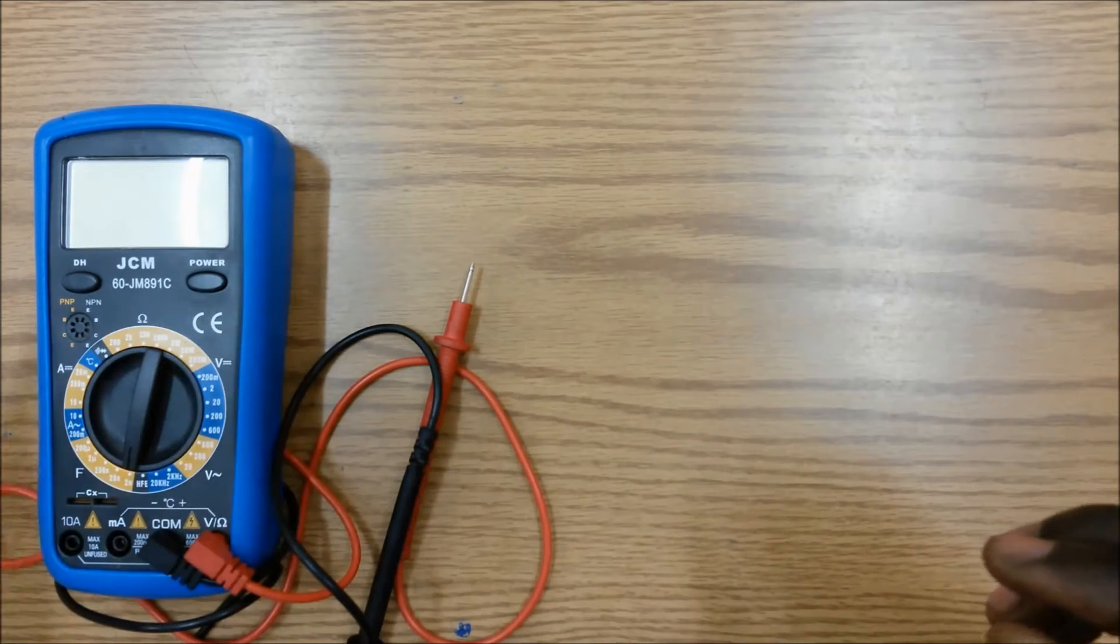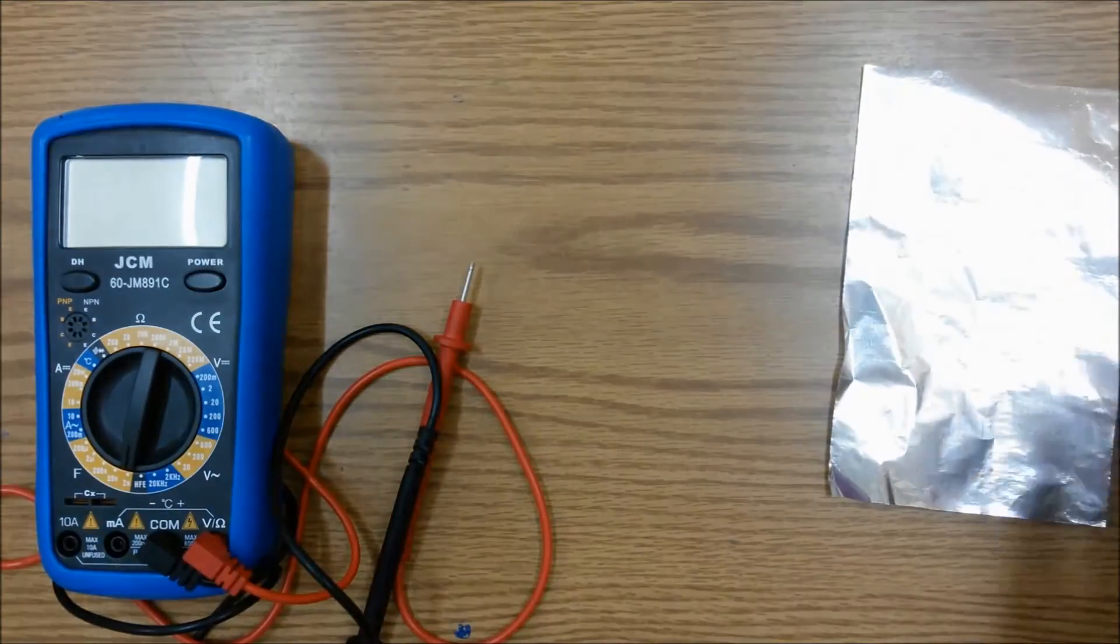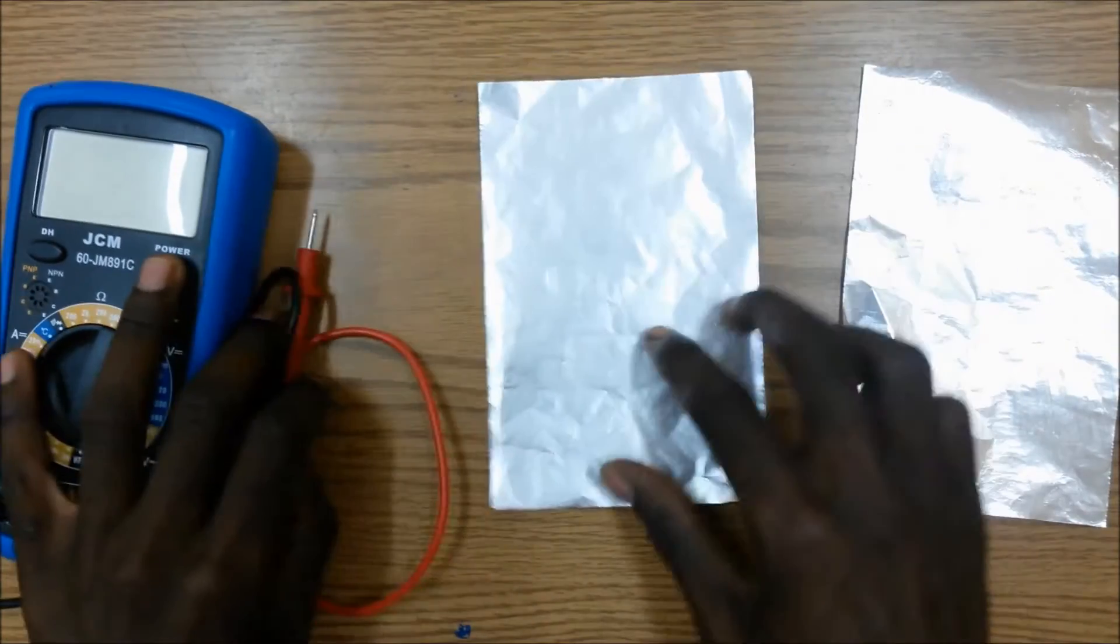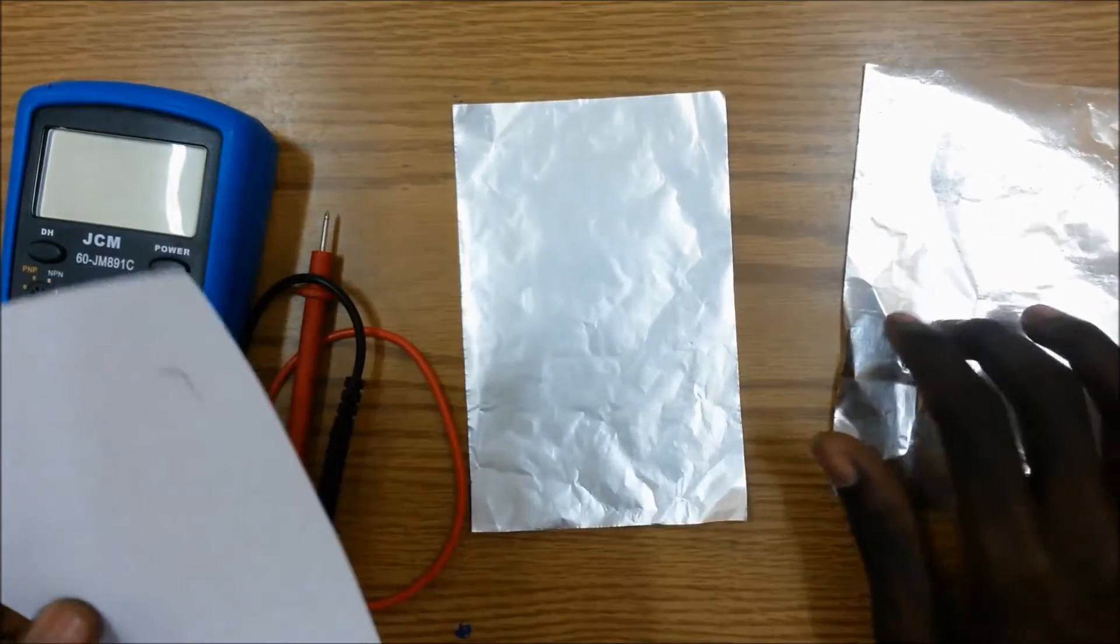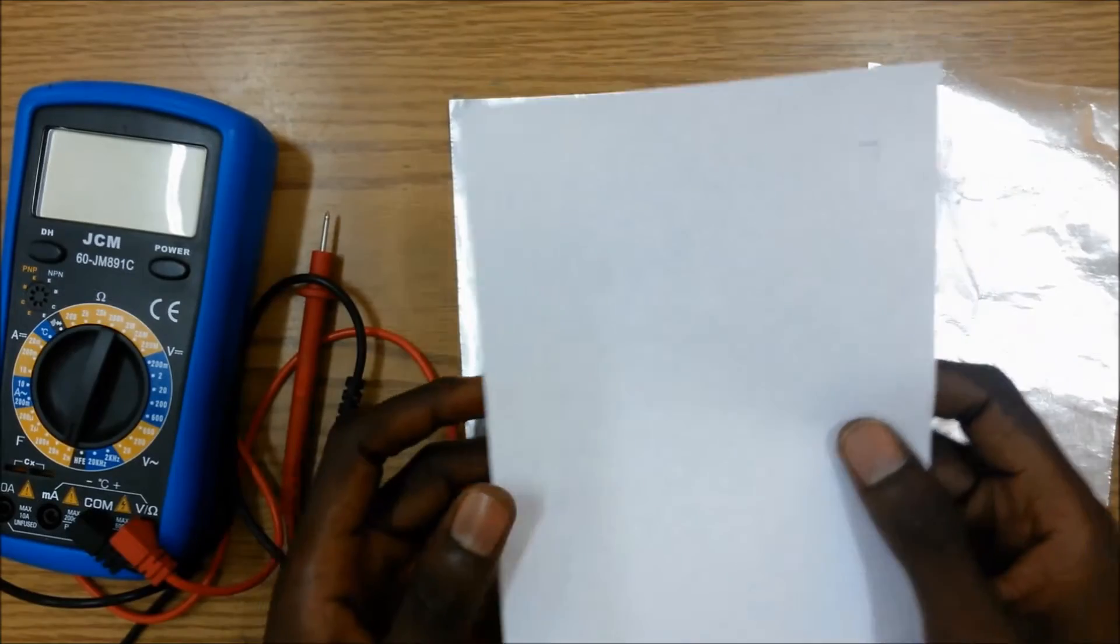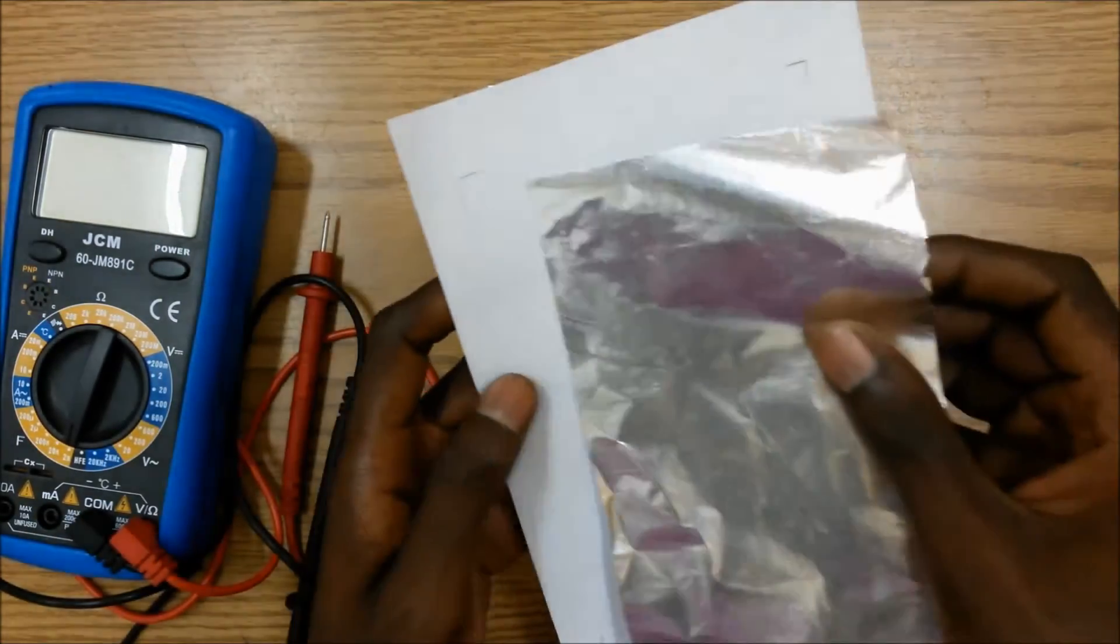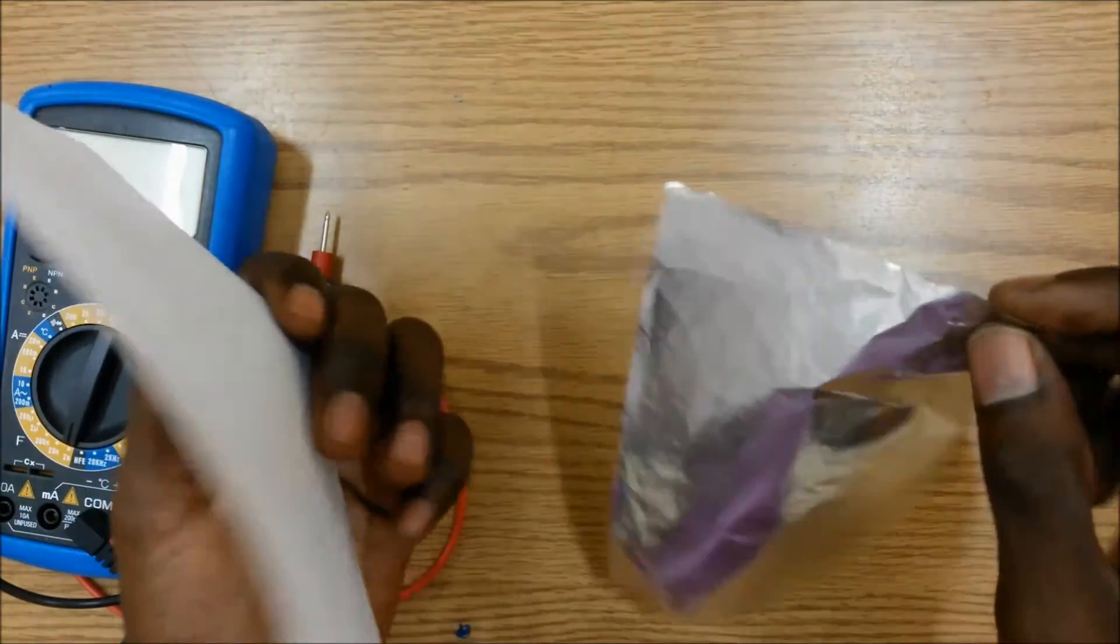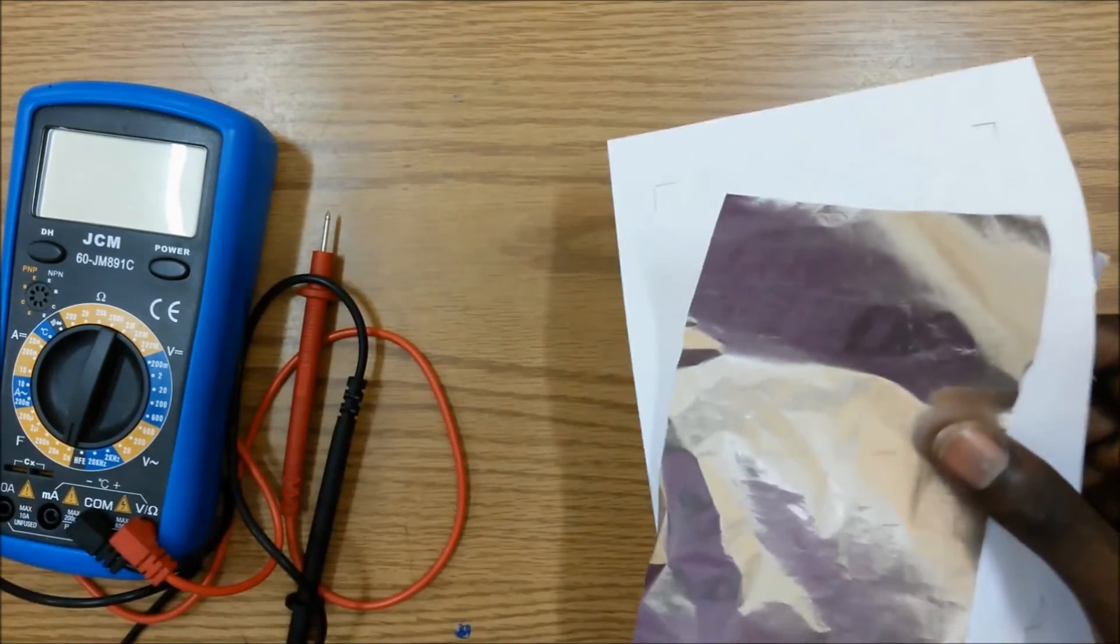Understanding this principle we wanted to see if we could make a capacitor for ourselves. We're gonna use two sheets of aluminum foil and a piece of paper. These two will be our conductive material and this our insulating material. To begin we're gonna place the aluminum foil on both sides and connect wires to act as our leads.